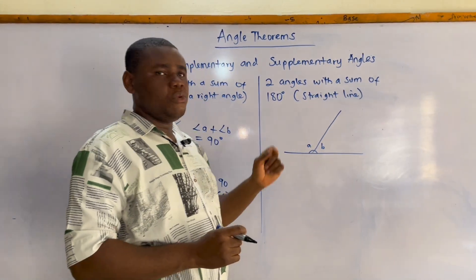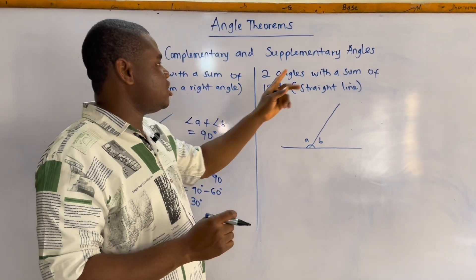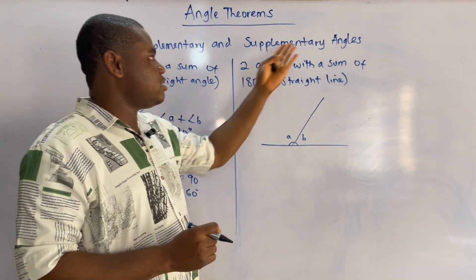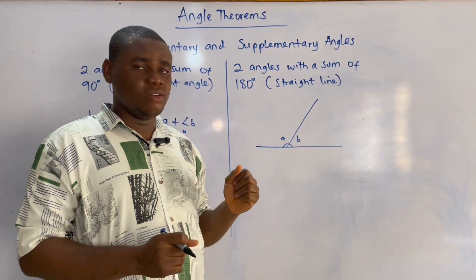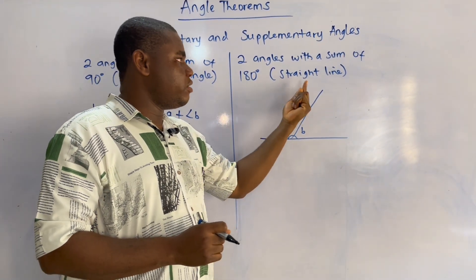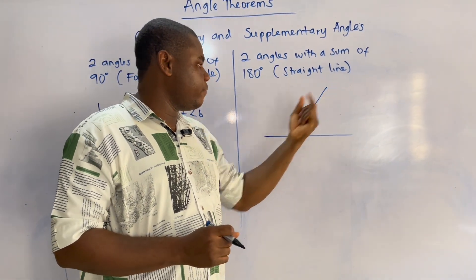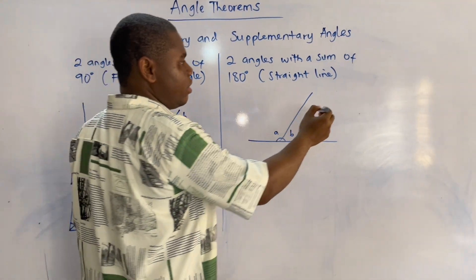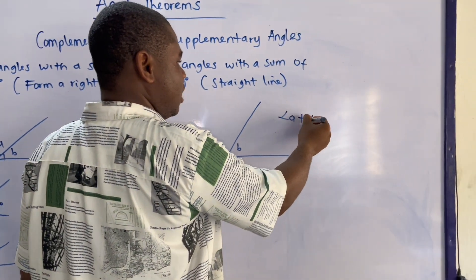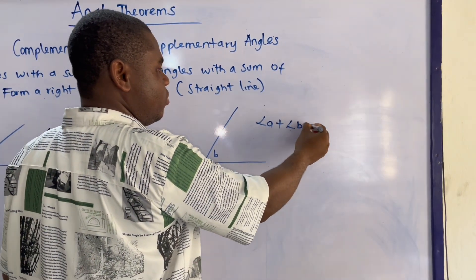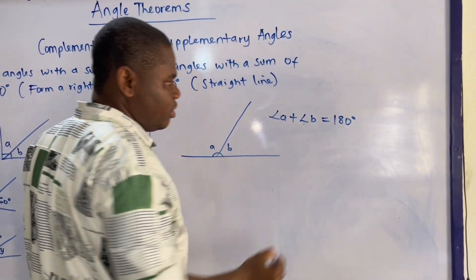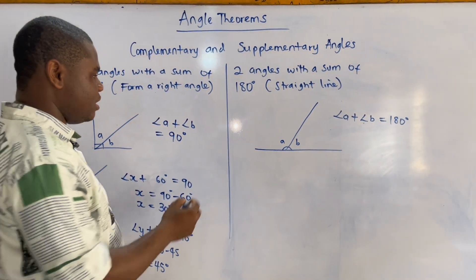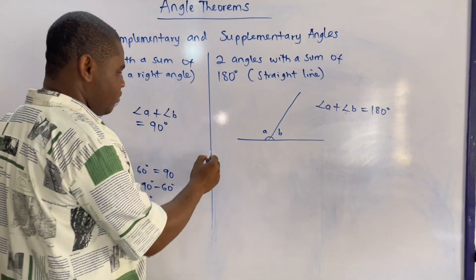Now let's go to supplementary angles. When two angles sum up to 180 degrees, those are supplementary angles. When we have 180 degrees, it means it's an angle on a straight line. So angle A plus angle B gives us 180 degrees.